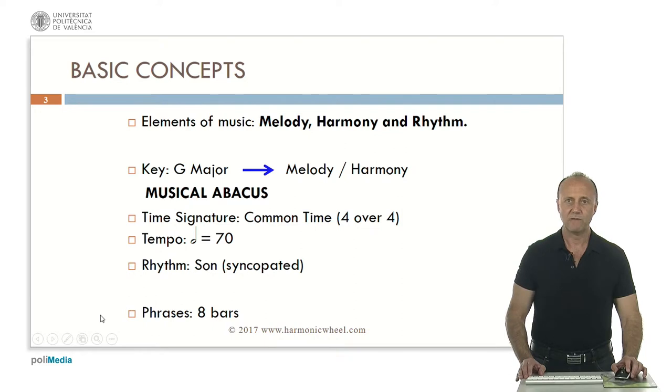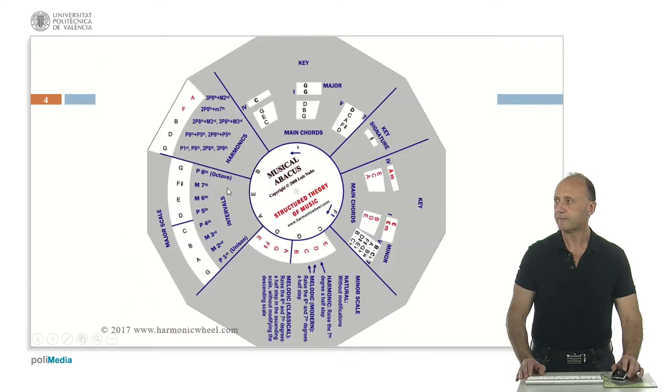We will compose phrases with 8 bars. This is the musical abacus where we chose the G major key as we can see in the upper part. This key contains one sharp in the key signature and that sharp corresponds to note F. In this part we have the G major scale with which notes we will compose the melody. In this part we have the 3 main chords in G major, but for simplicity we will use only 2 of them.